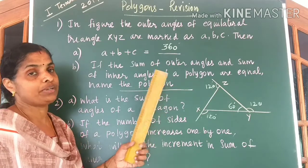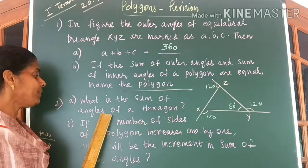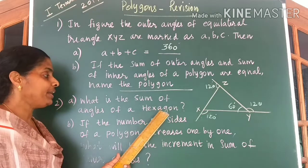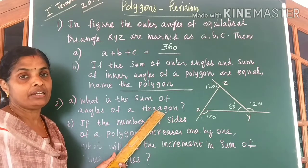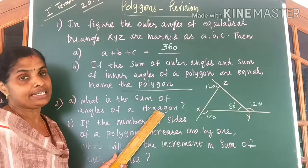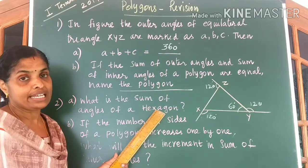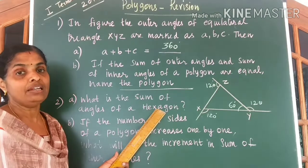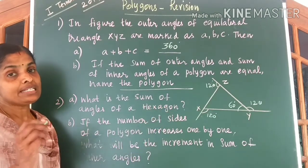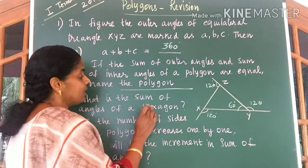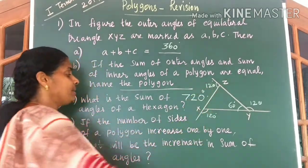Come to the next question. What is the sum of angles of a hexagon? For a triangle it is 180 degrees, quadrilateral 360 degrees, pentagon 540 degrees, and for a hexagon 720 degrees. So the answer is 720 degrees.